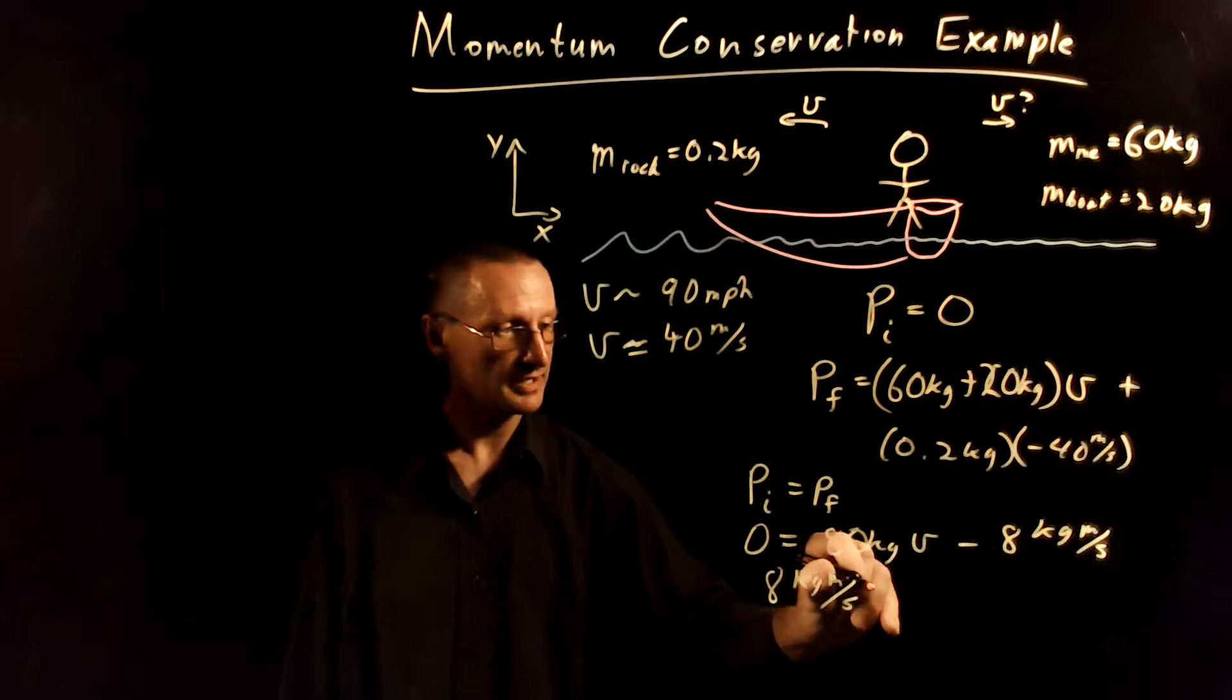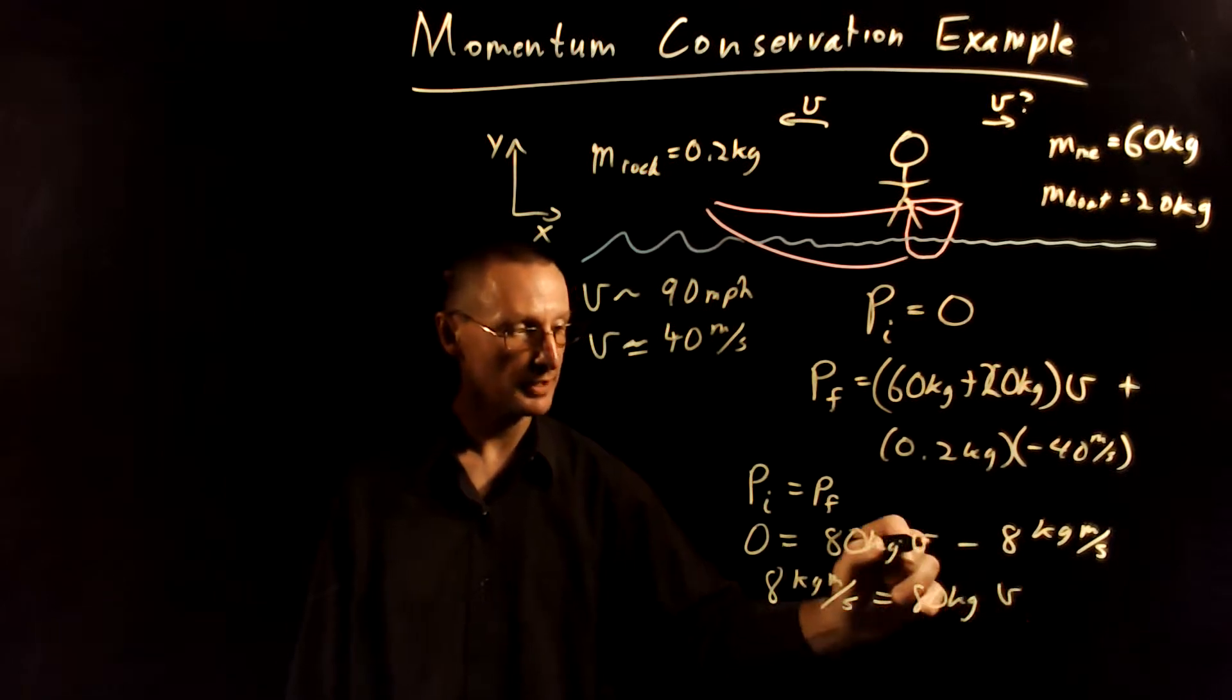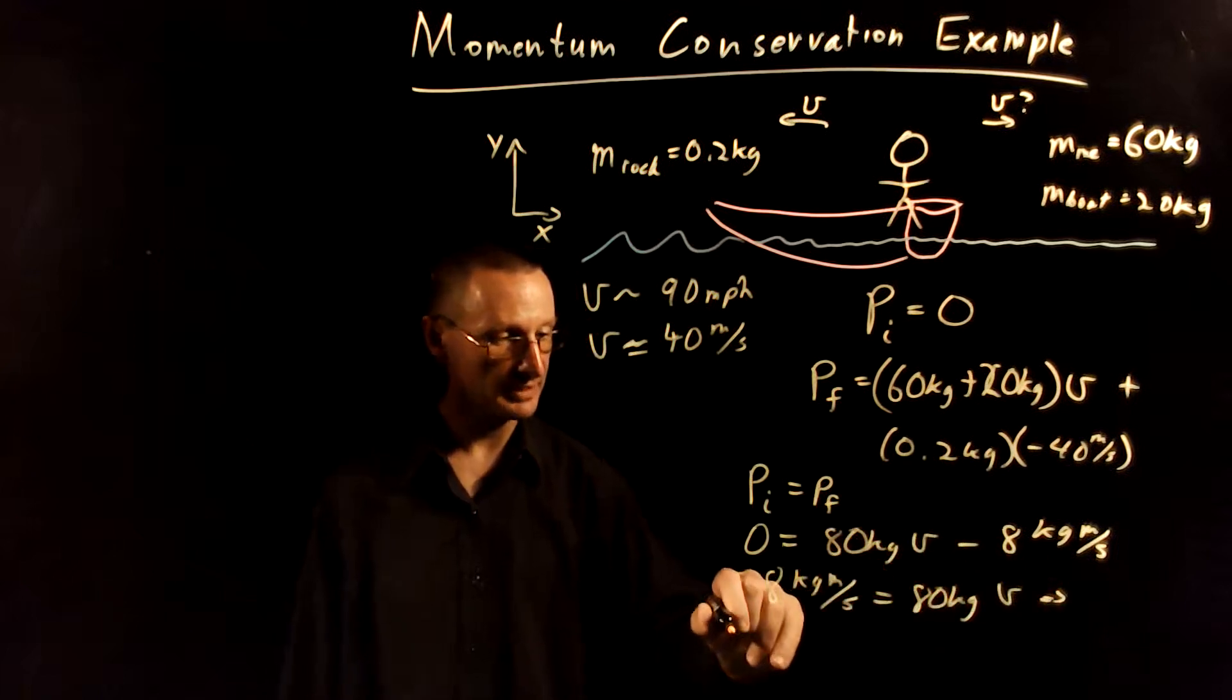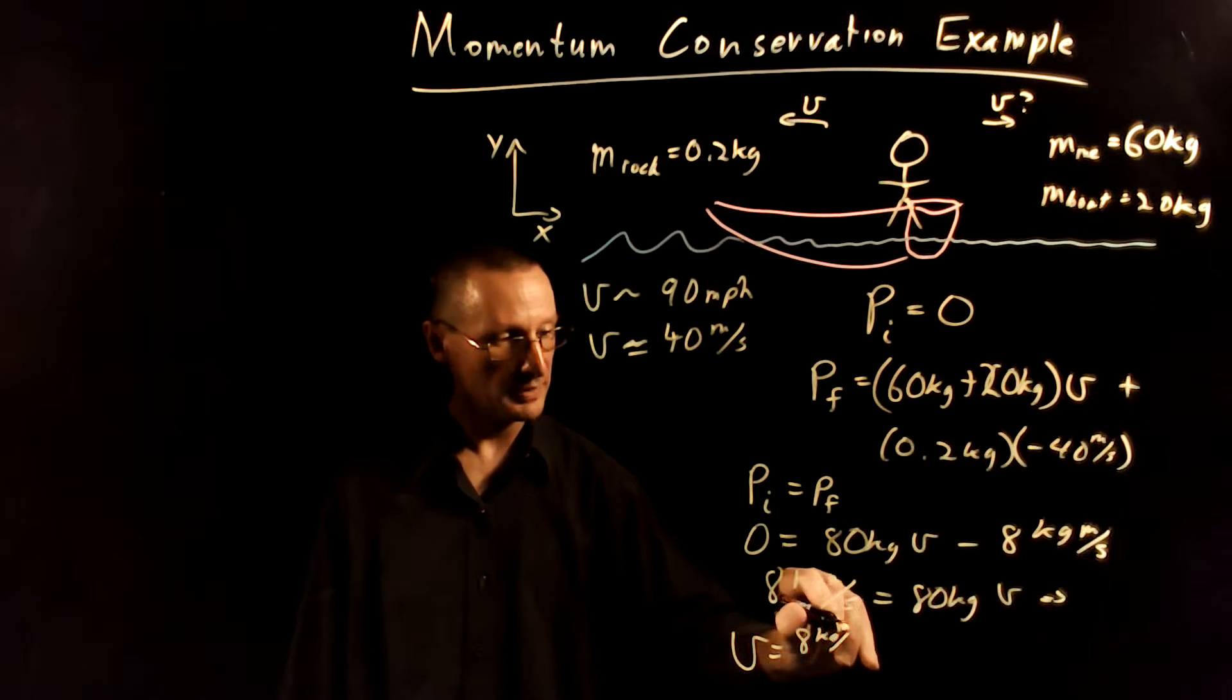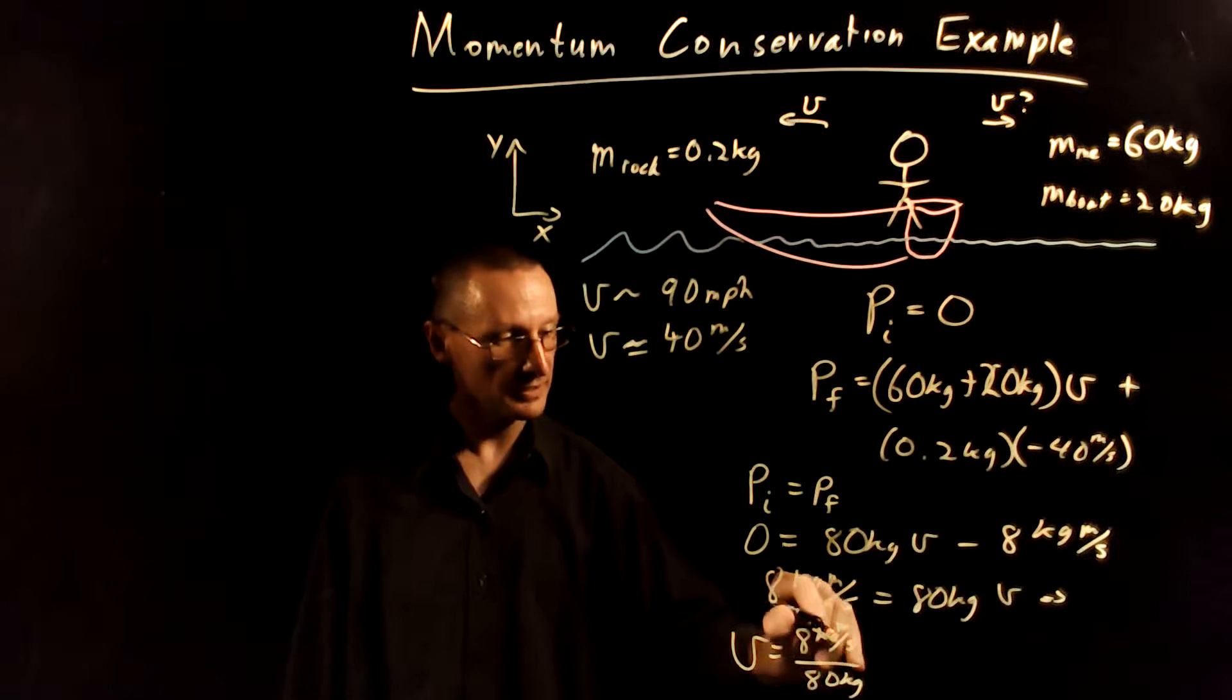That's equal to 80 kilograms times our unknown velocity. Or if I divide both sides by 80 kilograms, I get V is equal to 8 kilogram meters per second over 80 kilograms.